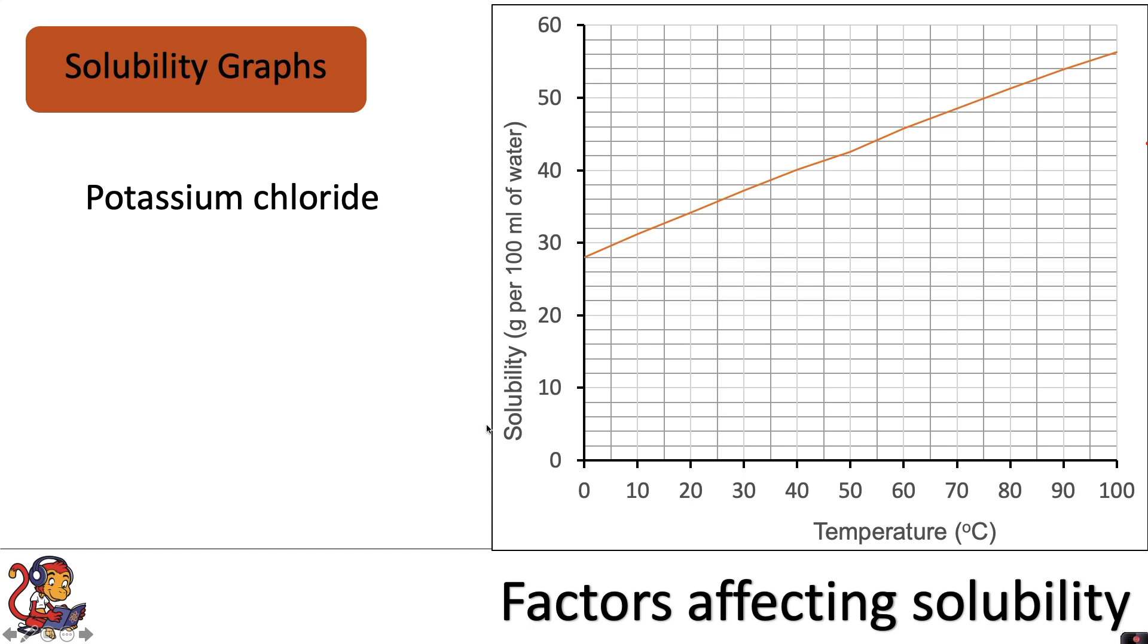You may need to read off of this graph. For example, if a question said, what is the solubility at 20 degrees C? You would have to draw a line from 20 degrees C to your graph and then draw another line across. And where this line intersects, you can read off the graph. So the solubility at 20 degrees would be 34 grams per 100 mils of water.